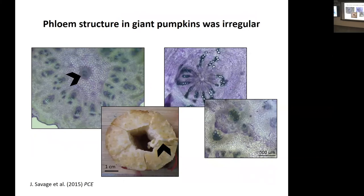In addition, there are interesting differences in the way the phloem is structured in giant varieties. These giant varieties, even when their fruits are young, start having some irregularities — you often see vascular bundles appearing in the middle of the cortex, or really irregular vascular arrangements. So in addition to having more phloem, the way it's arranged starts changing, especially as they get bigger.